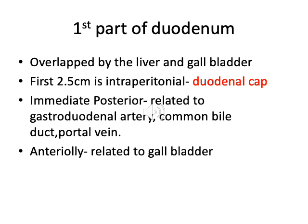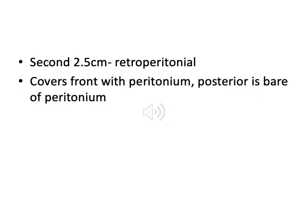The first part of the duodenum is overlapped by the liver and gallbladder. As mentioned, the first 2.5 cm is intraperitoneal and is called the duodenal cap. Immediately posterior to the first part of the duodenum you can see the gastroduodenal artery, common bile duct, and the portal vein. Anteriorly, the first part of the duodenum is related to the gallbladder. The second 2.5 cm of the first part of the duodenum is retroperitoneal, covered with peritoneum anteriorly but bare of peritoneum posteriorly.